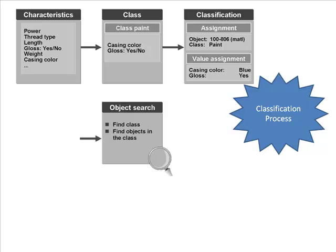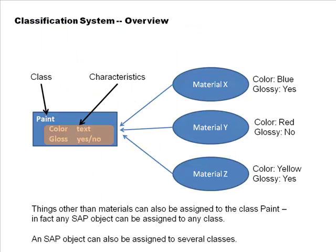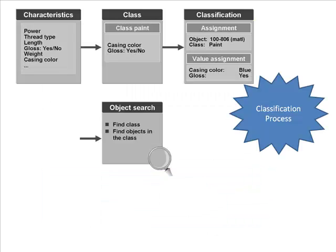So you create the characteristics, create the classes, and then you do two things. You assign an object to a class - that is called an assignment - just like in the previous slide where we assigned material X to the class 'paint'. But just assigning the material to the class is not enough, because if the class 'paint' has characteristics like color and gloss, you also have to specify the values for those characteristics. That process is called value assignment.